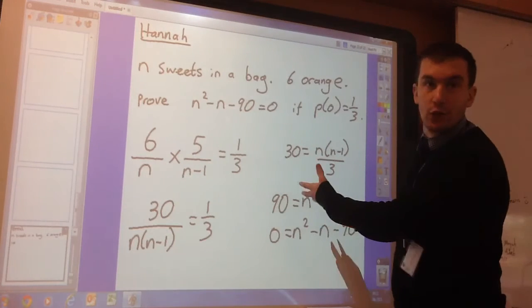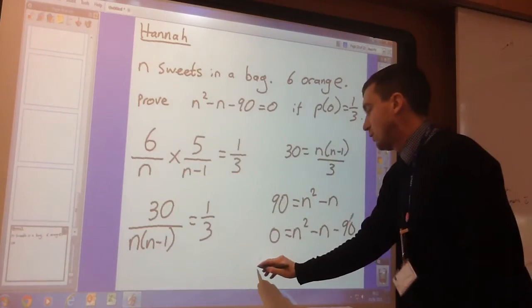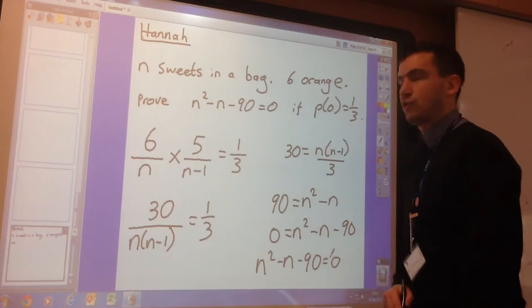I say all I've got to do, I mean we have done a lot of stuff. All I've got to do now, put the negative zero from that side to that side. So I end up with N squared minus N minus 90 equals zero.